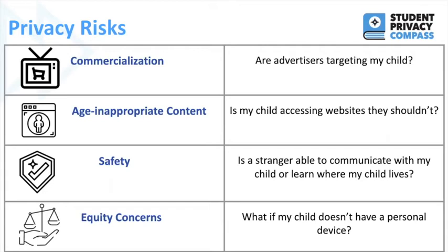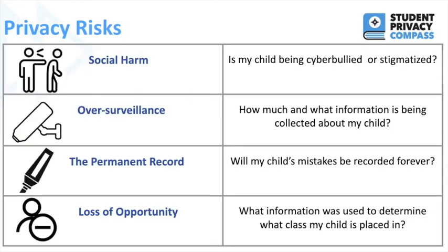Kids who don't own their own devices may get in trouble for things that kids with their own devices — typically of higher socioeconomic status — will not get into trouble for. Other privacy risks include social harm: is information being shared about my child that causes others to make fun of them or adults to see them differently? Over-surveillance: what exactly is being monitored when my child is on a school device, and could this lead to punishment or other repercussions? This ties into the permanent record — how is information collected about my child in elementary school going to follow and impact them in middle school, high school, or even beyond?